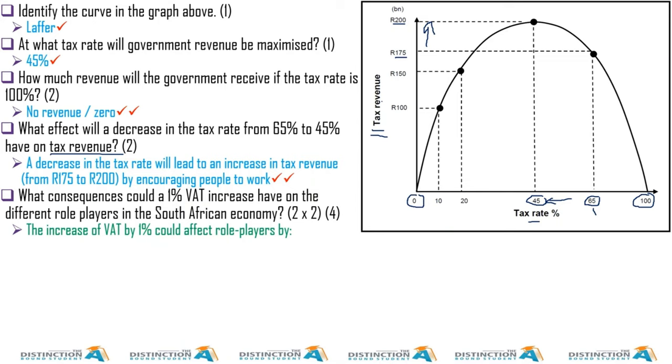What consequences could a 1% VAT increase have on the different role players in the South African economy? The increase of VAT by 1% could increase the revenue to the government if the same or more is spent by businesses or households. If nothing changes in terms of spending, then government will make more money, but it's not always guaranteed.